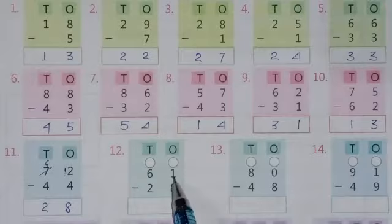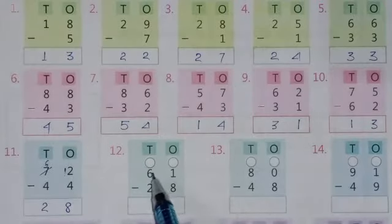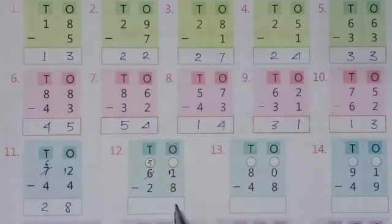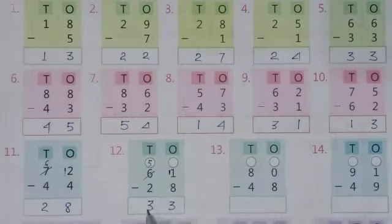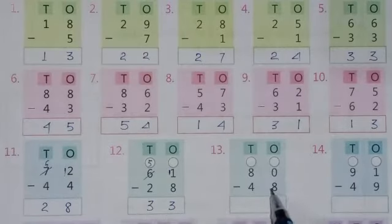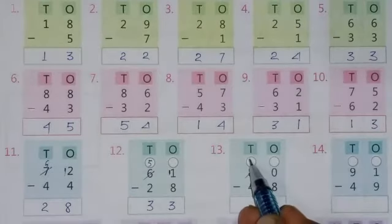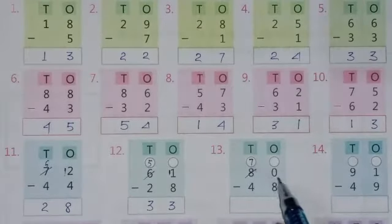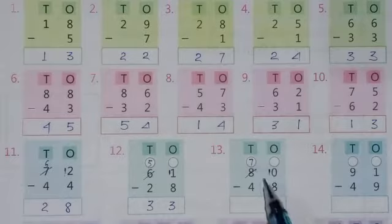Here 1 minus 8 is not possible, so borrow from this digit — this will become 5 and here will be 11. Now 11 minus 8 equals 3, and 5 minus 2 equals 3. Then 0 minus 8 is not possible, so borrow from this digit — this will become 7 and here will be 10. Now 10 minus 8 equals 2, and 7 minus 4 equals 3.